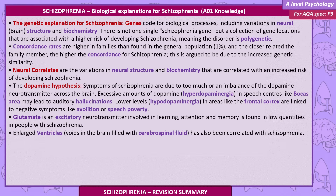Neural correlates are variations in neural structure and biochemistry correlated with increased risk of developing schizophrenia. The dopamine hypothesis: symptoms of schizophrenia are due to too much or an imbalance of dopamine across the brain. Excessive dopamine — hyperdopaminergia — in speech centres like Broca's area may lead to auditory hallucinations. Lower levels — hypodopaminergia — in areas like the frontal cortex are linked to negative symptoms like avolition or speech poverty.